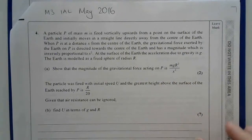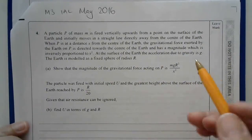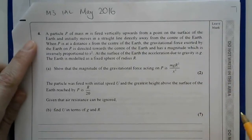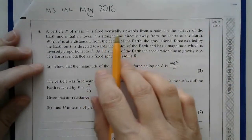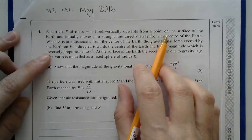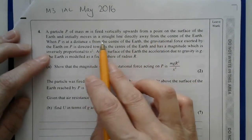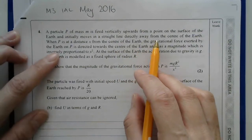Hello, so today I'm looking at M3 International A Level May 2016. This is question 4, and so I have a particle of mass M is fired vertically upwards from a point on the surface of the Earth.